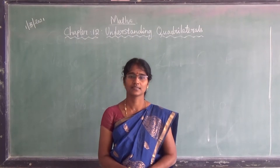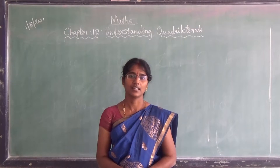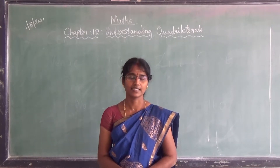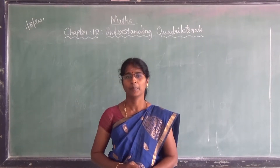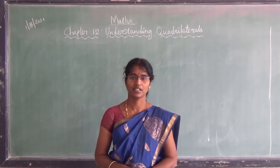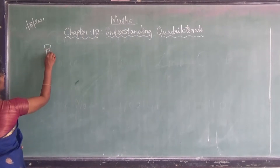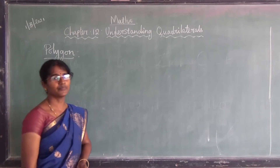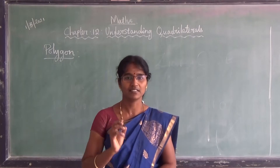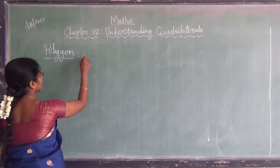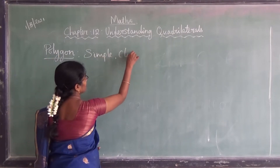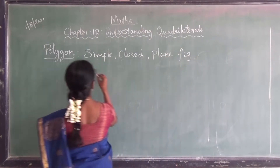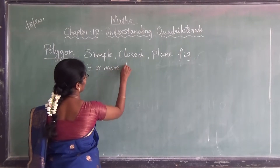Good morning everyone. In this video, we are going to learn chapter number 12, that is Understanding Quadrilaterals. You all know about the quadrilateral — it is a plane figure with four sides. In this chapter, the first thing we are going to learn is the polygon. Polygon is a simple closed plane figure with a minimum of three or more line segments.